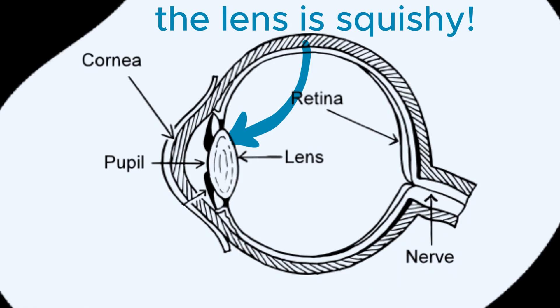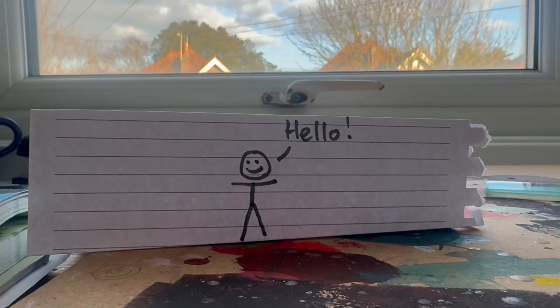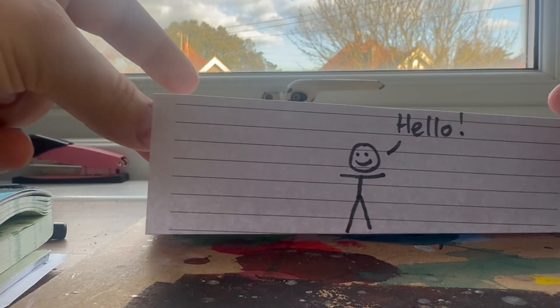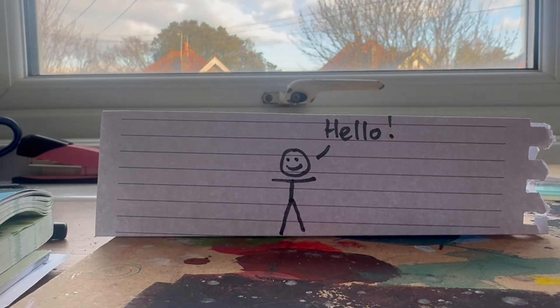Let's explore how this works. Inside your eye there's a flexible lens that changes its shape to focus on light. It's controlled by tiny muscles that squeeze or relax to make the lens thicker or thinner. In this experiment we're going to compare the effects of a thick lens and a thin lens.